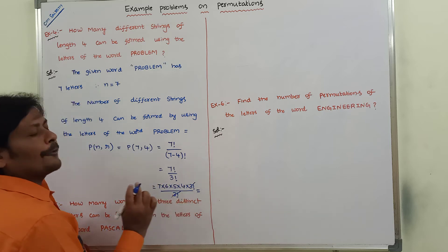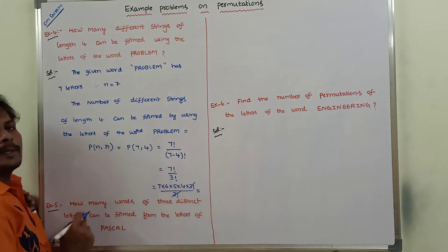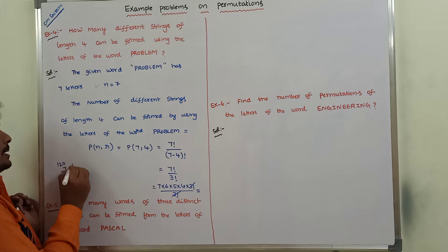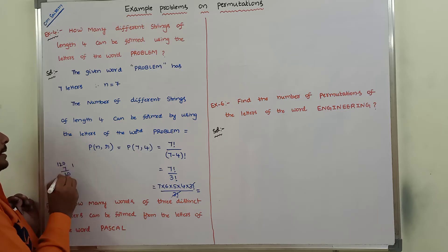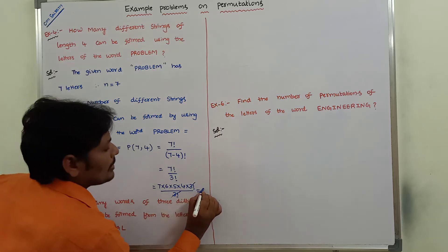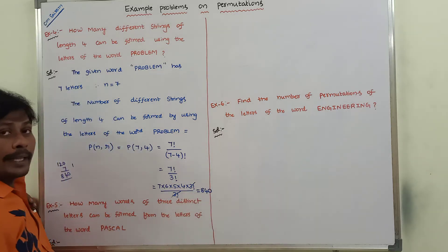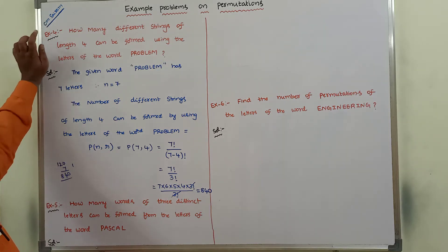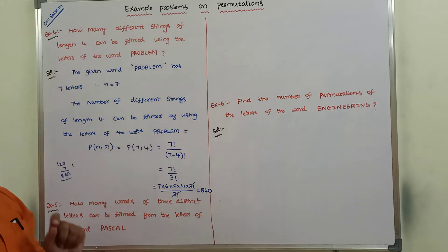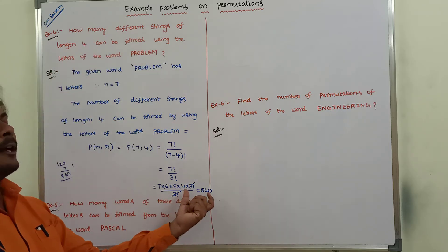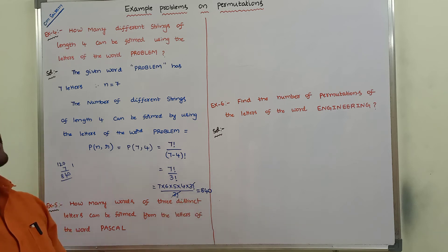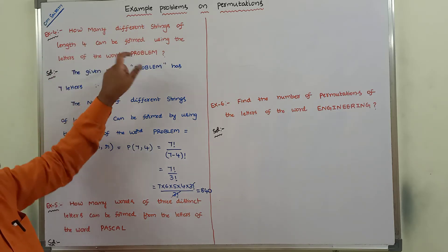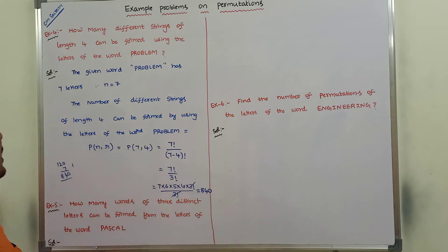So that is four into five, that is twenty; twenty into six, that is one twenty; one twenty into seven, that is eight forty. The answer is 840. Total number of ways is 840 — different strings of length four can be formed by using the letters of the word PROBLEM.